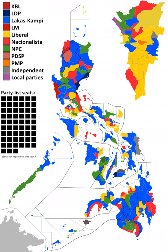No party entered candidates in all districts, but only Lakas-Kampi CMD entered enough candidates to win an outright majority. By May 21, GMA News and Public Affairs, based on their partial and unofficial tally, had Lakas-Kampi CMD as the party with the most seats with 109, followed by the Liberal Party with 43, the Nationalist People's Coalition had 33, and the Nationalista Party had 25. The other parties garnered 13 seats.